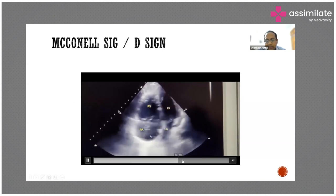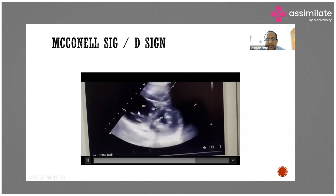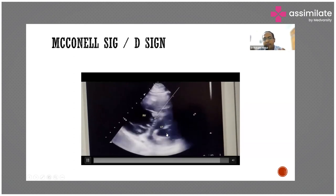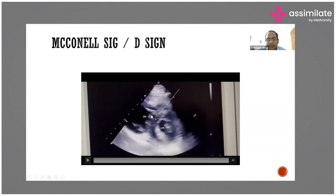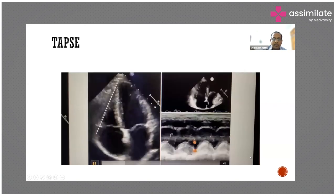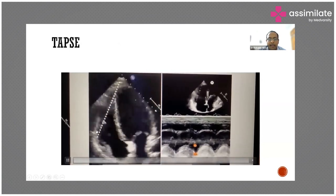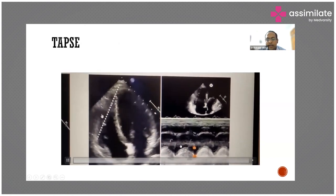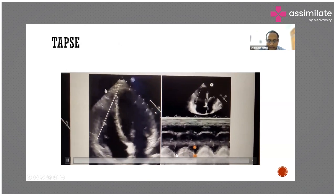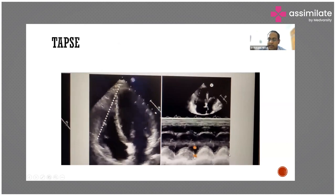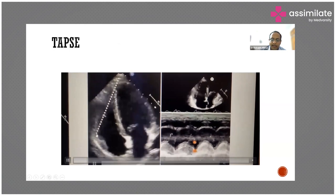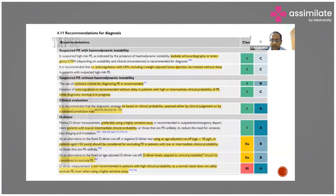The D sign: the left ventricle is not getting filled properly, the right ventricle is dilated and pushing on the left ventricle, and the interventricular septum is getting flattened. For TAPSE measurement, an M-mode is placed on the lateral free wall of the right ventricle at the level of the annulus; excursion less than 15 mm indicates RV dysfunction, though not exclusively pulmonary embolism.